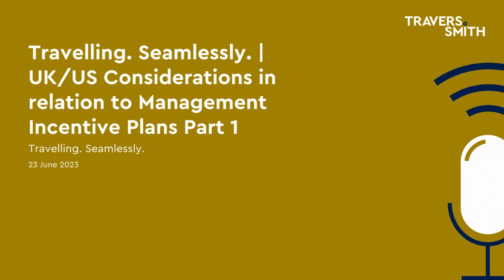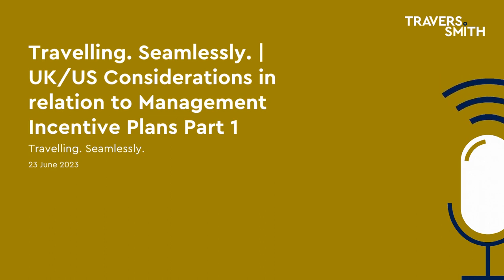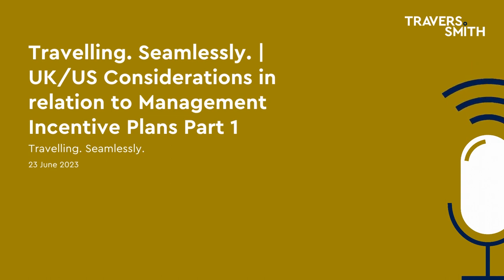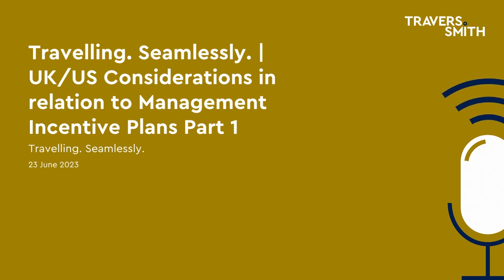That sounds like a really useful and tax-efficient arrangement for US managers. While we don't have anything similar in the UK, we have seen an international MIP structured in such a way to enable it to qualify as a profits interest in the US and also work effectively for UK managers. The way we've seen this done is to set up the MIP in a company which has been checked open for US tax purposes, meaning it's regarded as a partnership in the US. Two different classes of MIP shares are then issued, which enables the US managers to receive their shares as profits interests for nil consideration, while UK managers get their shares in exchange for full unrestricted market value consideration. The shares would have identical rights and the only difference would be the upfront subscription cost.